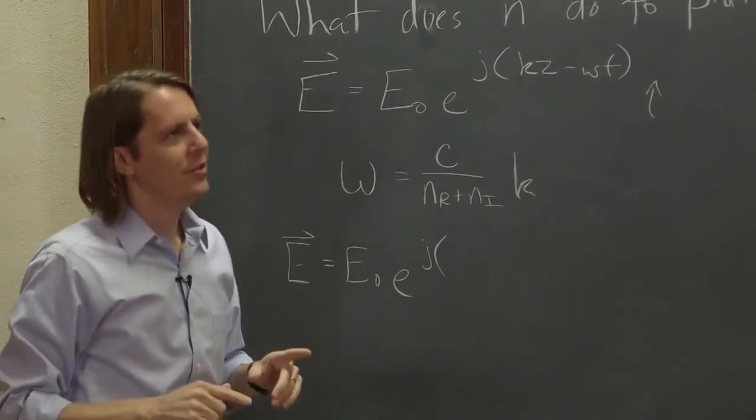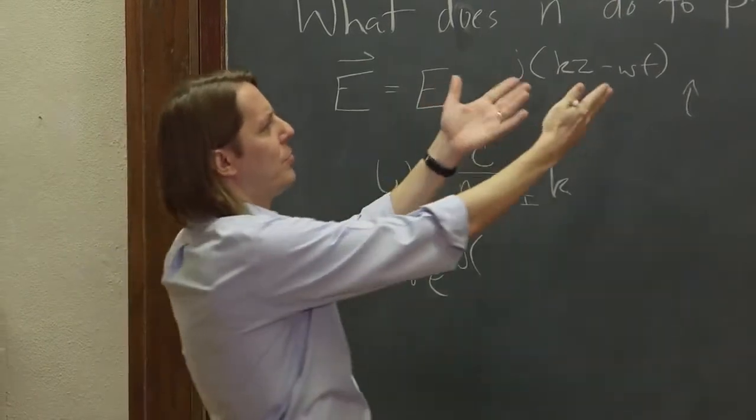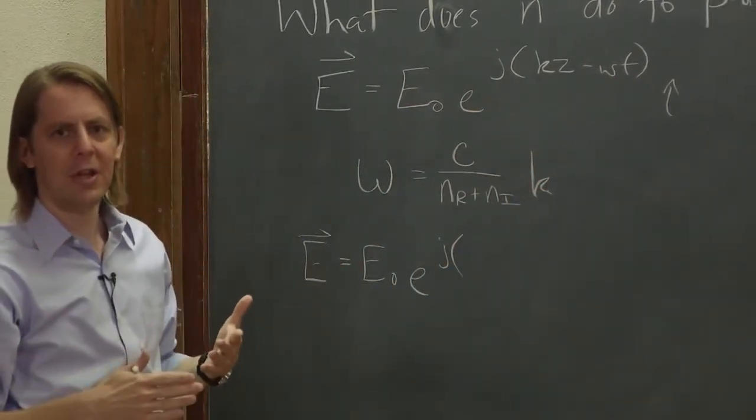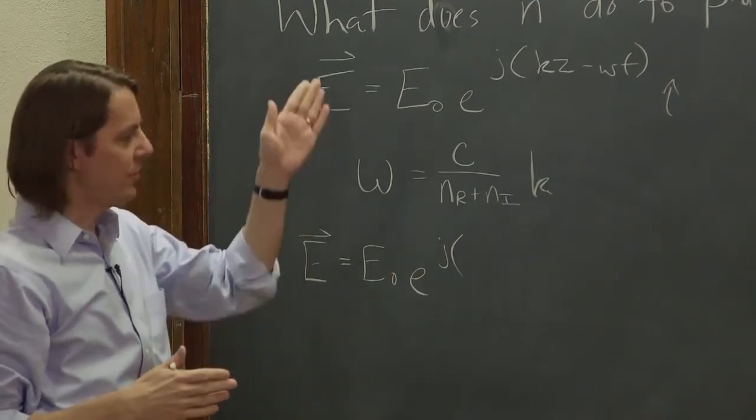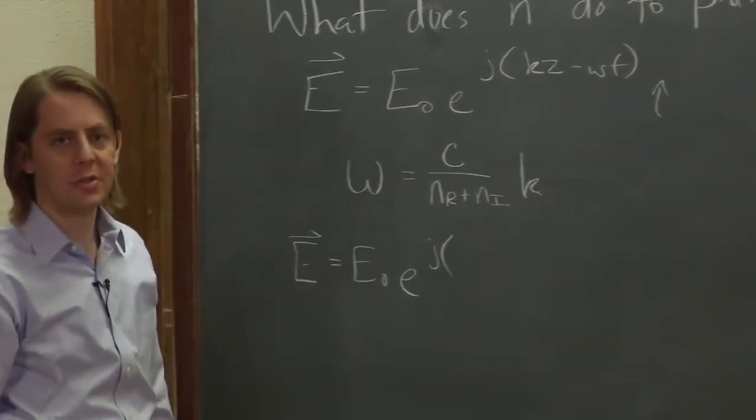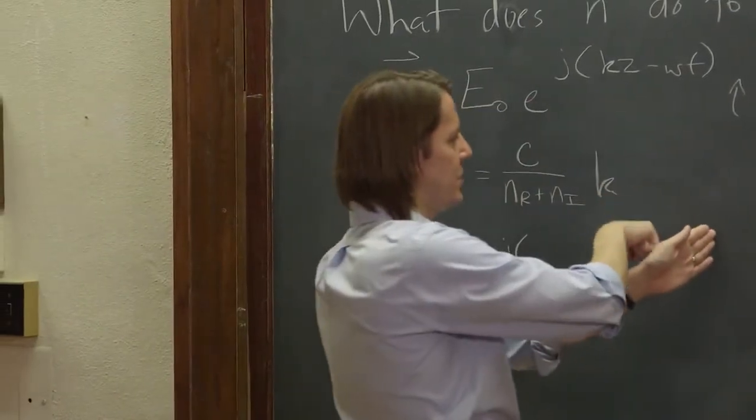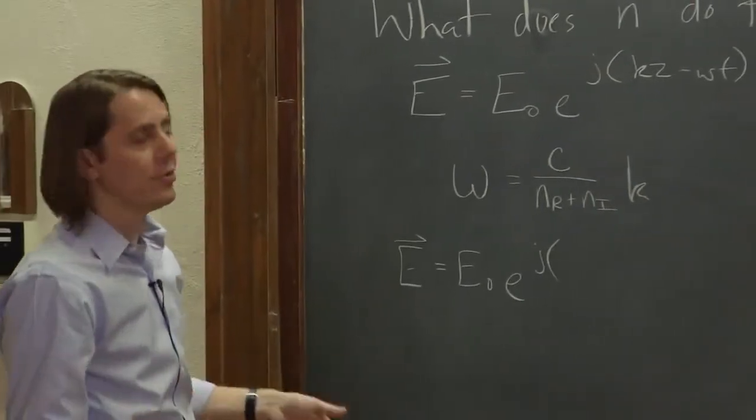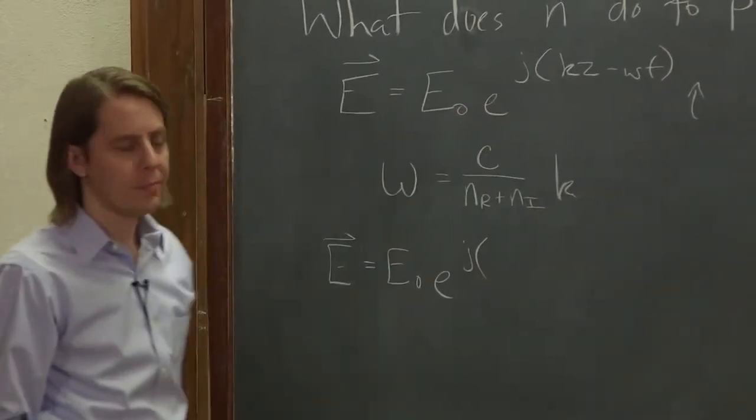The other way to think about it is you might wonder, well, it looks so symmetric. Why is it one over the other? It's because of the type of boundary condition we have. This is a boundary condition in space for all time. So it's the spatial part that changes. It's a boundary condition in space where the index changes in space, but it's constant in time. So the answer is you substitute for k.